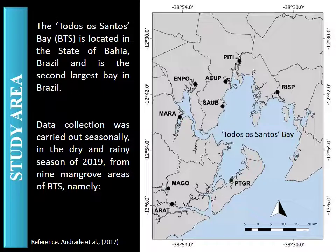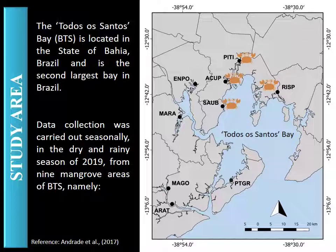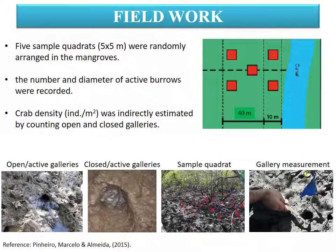The Todos os Santos Bay is located in the state of Bahia, Brazil. Data collection was carried out seasonally in the dry and rainy seasons of 2019 from nine mangrove areas of BTS, namely: São Paulo River, Pitinga, Acupi, Salvara, Engenho da Ponte, Maragojipe, Maragojipinho, Aratuípe, and Ponta Grossa. Five sample quadrats were randomly arranged in mangroves.